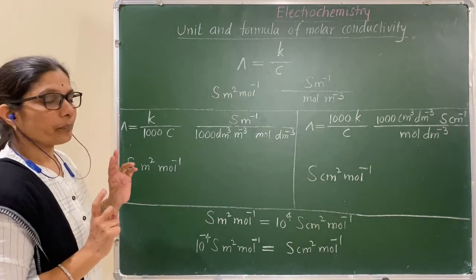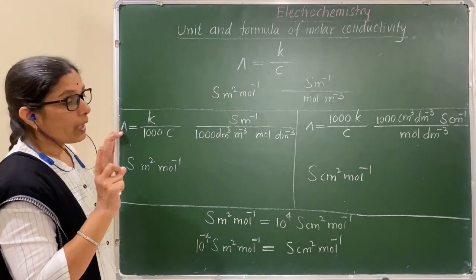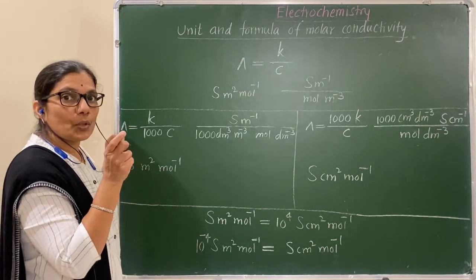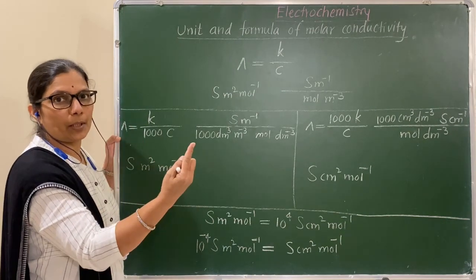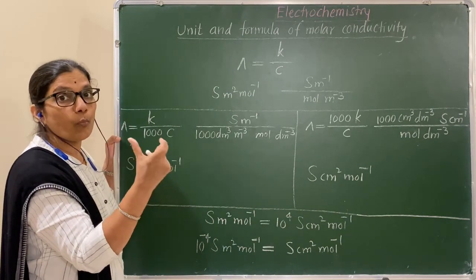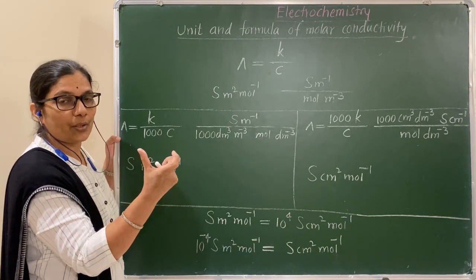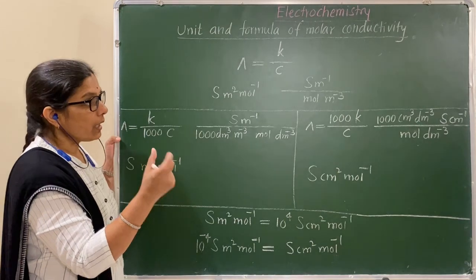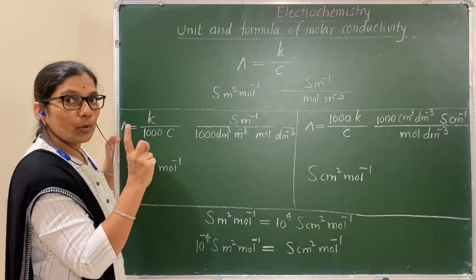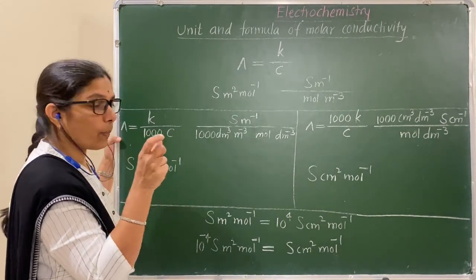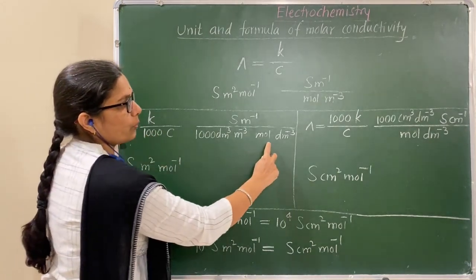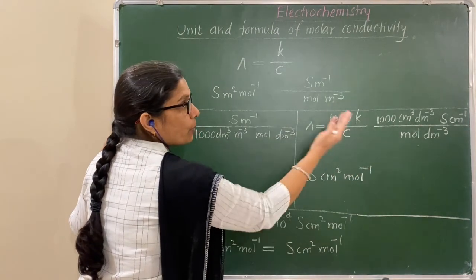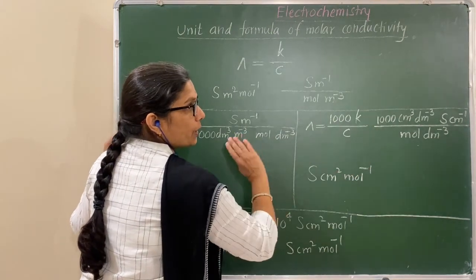Now, concentrations are usually given in mole per dm cube — molar concentrations. Suppose concentration is given in mole per dm cube; there are two formulae for the mole per dm cube case.